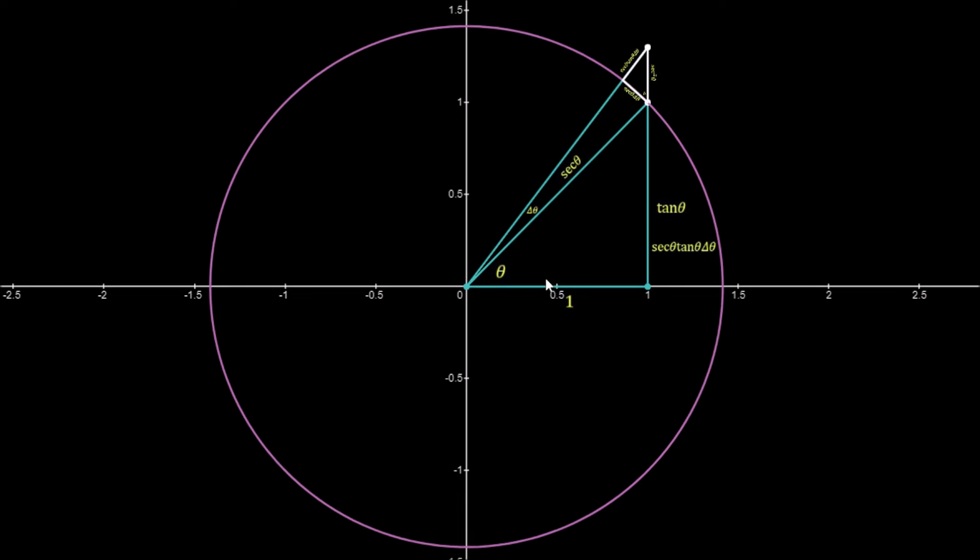Now we've seen in the previous video that if we have this length 1, then this height here will be tan theta.